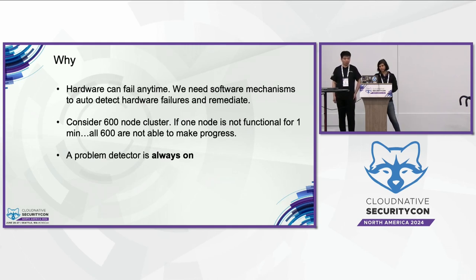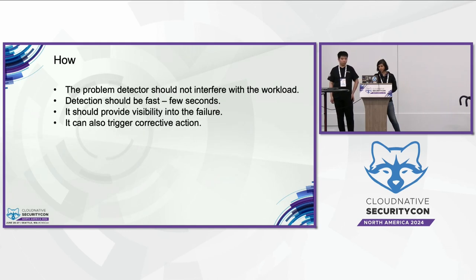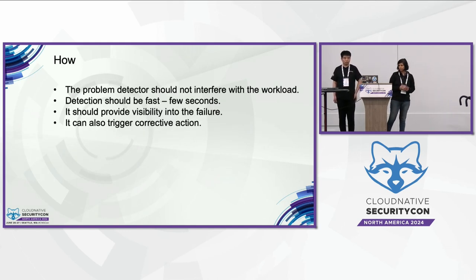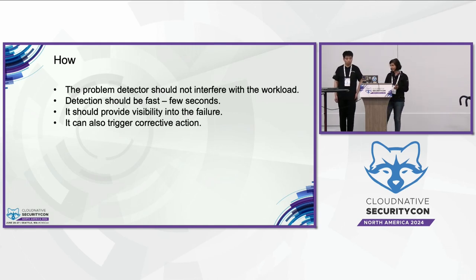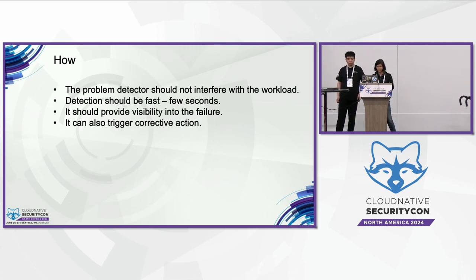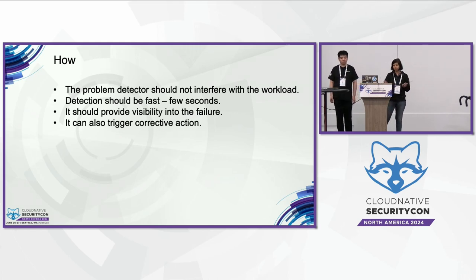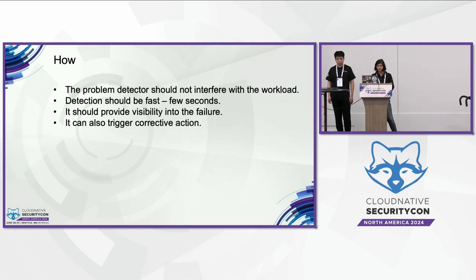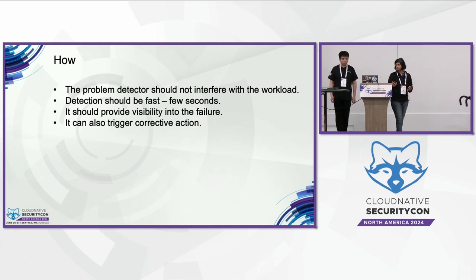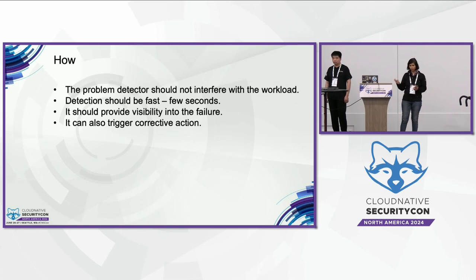The hardware can fail anytime, so it's very important that we build resiliency into the software layers to detect hardware failures and remediate. That's why you need a problem detector that is always on. Some design goals: because it's always on, it cannot use the AI/ML chips and cannot interfere with the workload. It cannot have overwhelming CPU or memory requirements. Preferably, we want to detect errors fast, in a few seconds. We also want to make the failure visible in an appropriate way — for example, in Kubernetes environments, we want it to reflect in the Kubernetes control plane, so any watchers on the Kubernetes object can trigger.